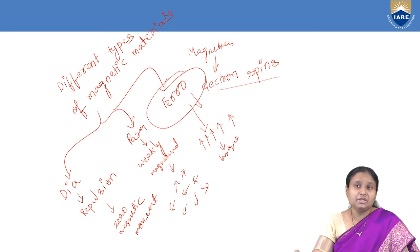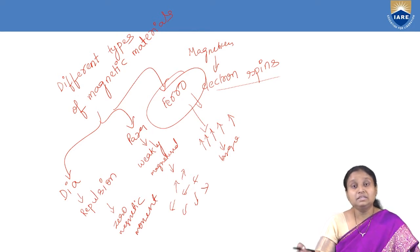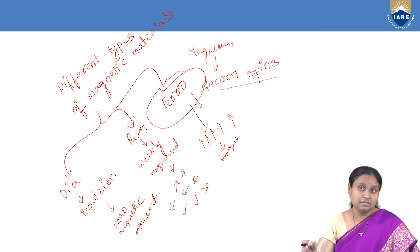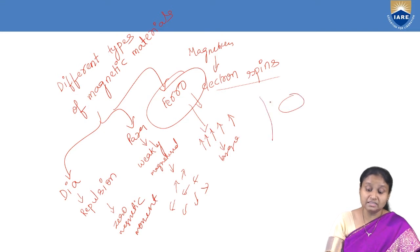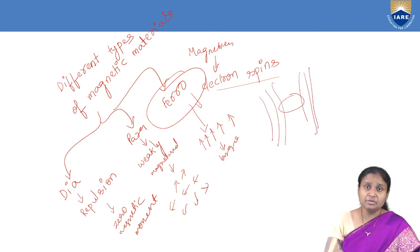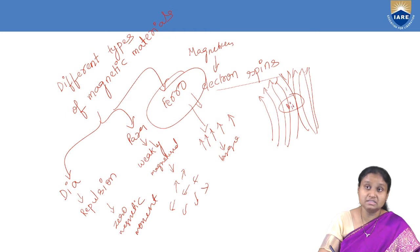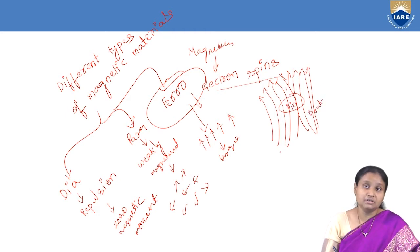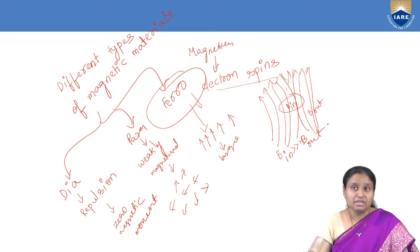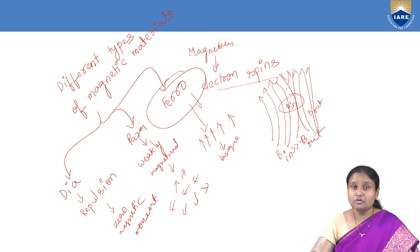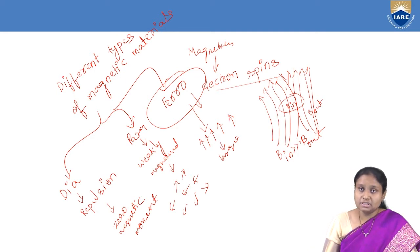Ferromagnets show very high values of relative permeability and very high values of magnetic flux density. When we keep a ferromagnet in an external magnetic field, we observe very high penetration of magnetic lines of force. The flux density inside the ferromagnetic material will be very much greater than the flux density outside. That is why relative permeability values are very high, on the order of hundreds and thousands.